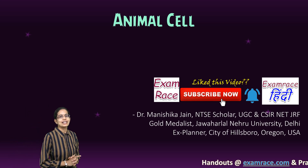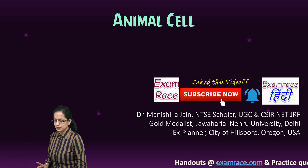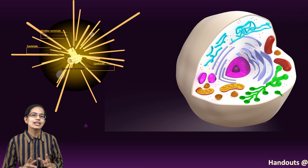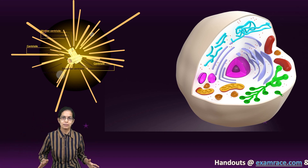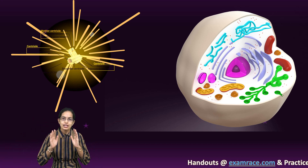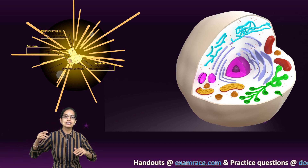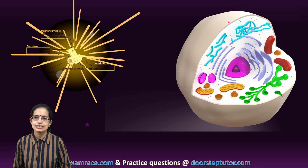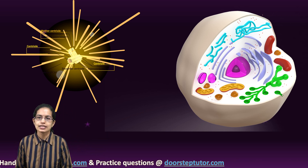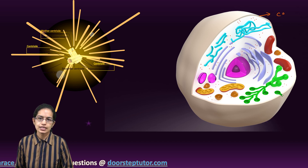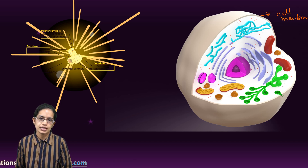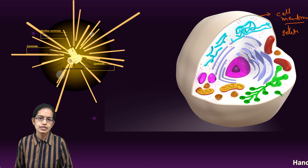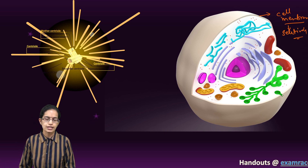Let's talk about animal cell and its constituents. In animal cell, the outermost layer is cell membrane. In the case of plant cell, we had seen the outermost layer is cell wall, but in animal cell, it's directly the cell membrane that is there. This cell membrane, as we know, is selectively permeable — that means it allows certain things to enter and certain things not to enter into the cell.